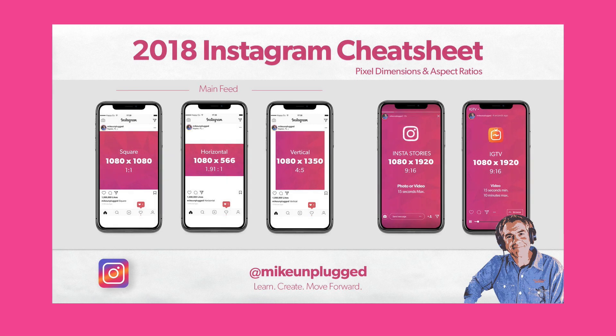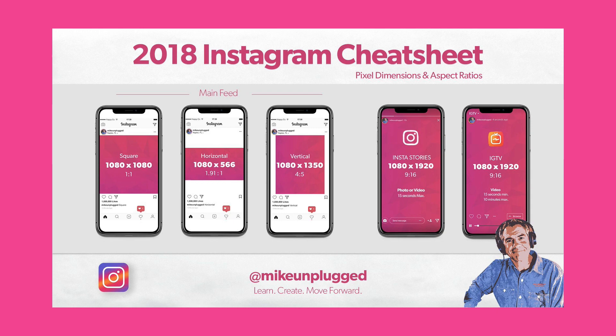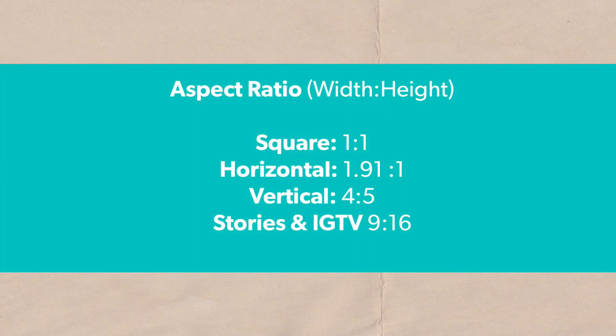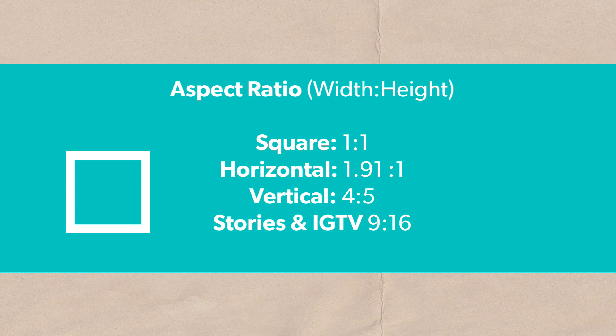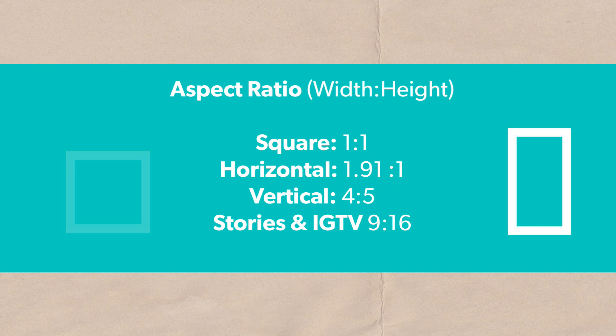I keep these really simple — I use the same width for everything. 1080 pixels is the starting point. The next thing to understand is aspect ratio, which is simply width to height. The first number always references the width and the second always references the height. So a square is 1080 by 1080 — a 1:1 aspect ratio because the width is the exact same as the height. For Instagram stories, it's a 9 by 16, so it's almost twice as tall as it is wide — that's 1080 by 1920.